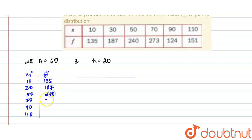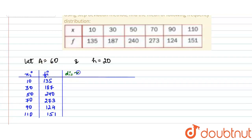The fi values are: 135, 187, 240, 273, 124, and 151. Now I will calculate di, which is xi minus the assumed mean. So: 10 − 60 = −50, 30 − 60 = −30, 50 − 60 = −10, 70 − 60 = 10, 90 − 60 = 30.